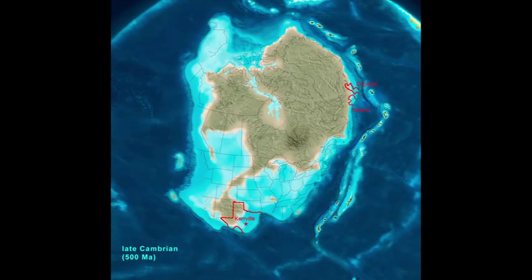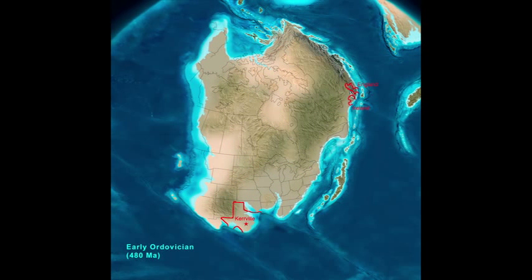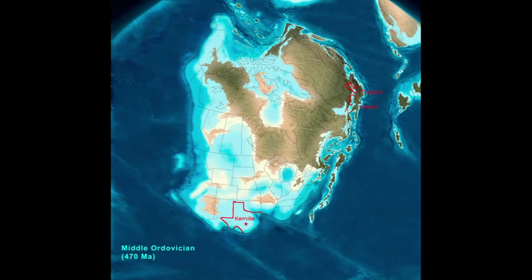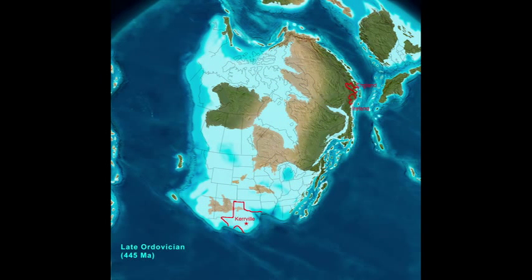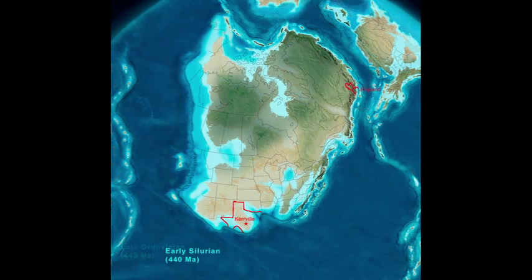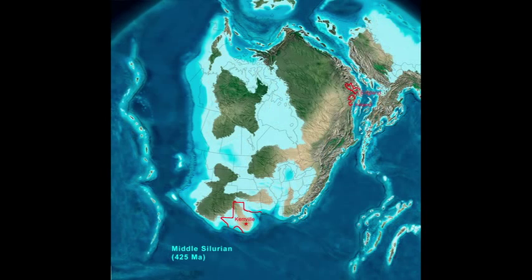As South America moves out of the picture, a string of islands is approaching North America from the right. This is an island arc, which formed when two oceanic plates collided. The arc will bump into North America and form a chain of mountains from Greenland all the way south to Georgia. Two small continental plates are heading our way from the upper right — they are fragments of what are now parts of Western Europe. A northwest-to-southeast ridge has formed across Texas. Kerrville is near the southeastern end and was probably high and dry most of this time.